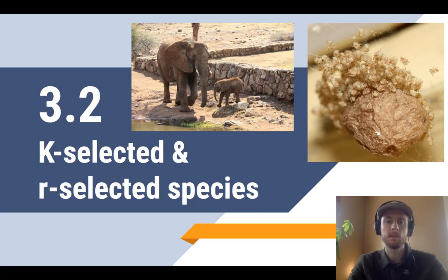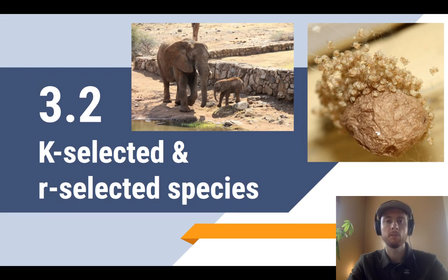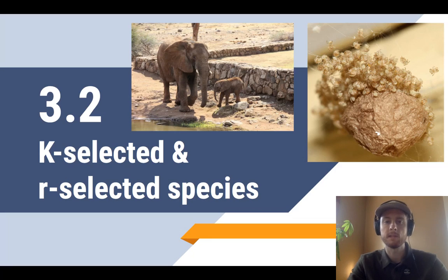K-selected species use what I like to call quality over quantity. So they have just a few offspring at a time, but they take really good care of them. They're able to do this because they live a long time and can afford to spend their energy and time on parenting. Elephants here are a great example.